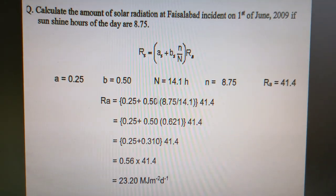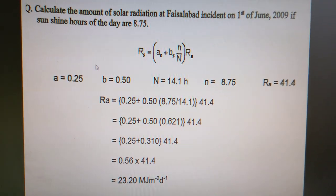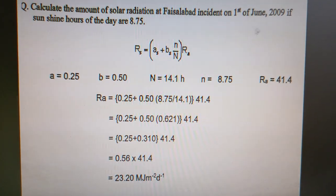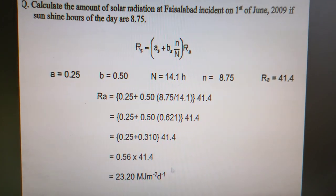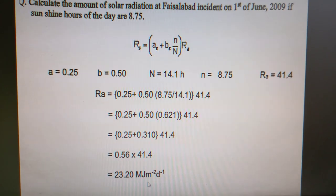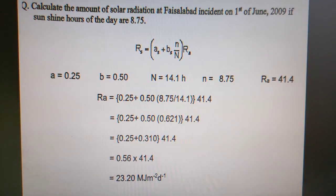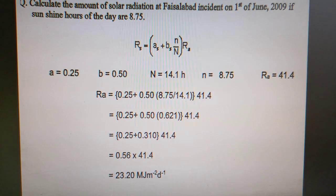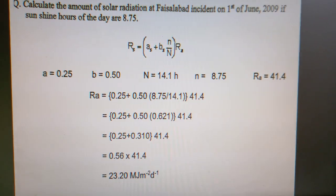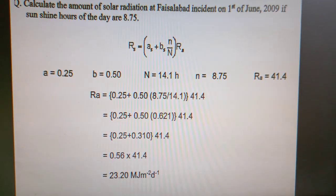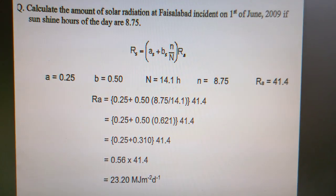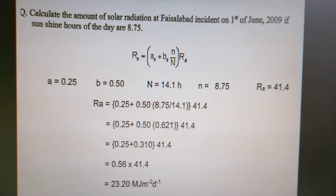This result shows that the solar radiation at Faisalabad on 1st June was 23.20 megajoules per meter square per day — meaning 23.20 megajoules of energy per 1 meter square area per day. Thank you very much.